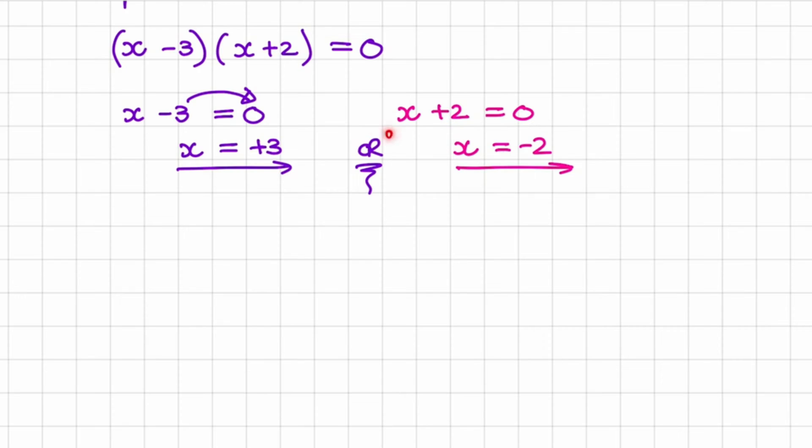But notice I say or because either 3 or negative 2 will satisfy the equation, meaning make the left hand side equal to the right hand side.